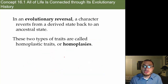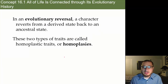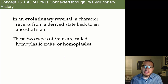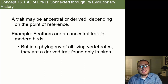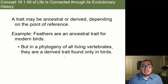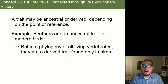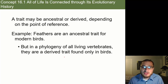In any evolutionary reversal, a character reverts from a derived state back to an ancestral state. These types of traits are called homoplastic traits, or homoplasies. A trait may be ancestral or derived depending on the point of reference on your phylogenetic tree. For example, feathers are an ancestral trait for modern birds, but in the phylogeny of all living vertebrates, they are a derived trait found only in birds.